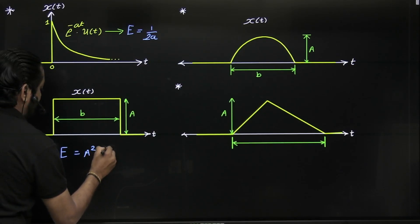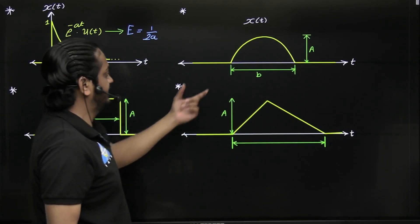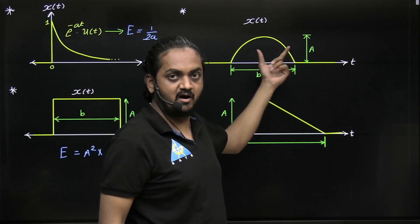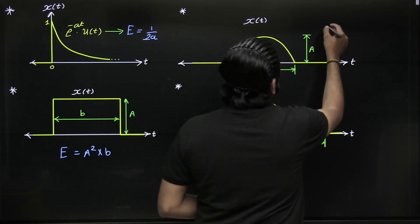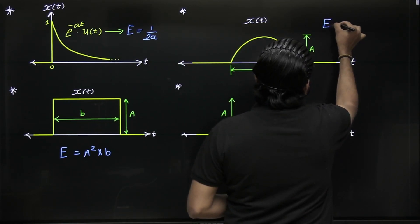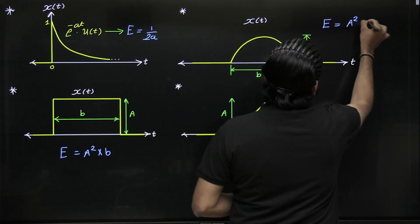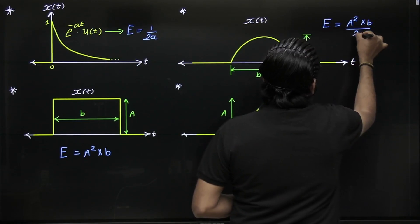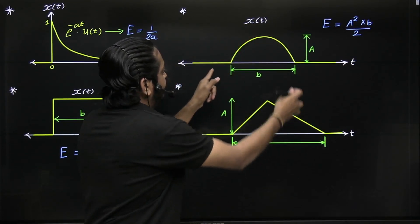Suppose there is a half sinusoidal waveform, half wave. Then its energy is given by A² times B divided by 2, where A is the peak amplitude and B is the total width.